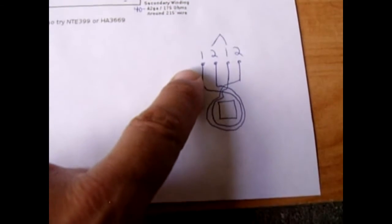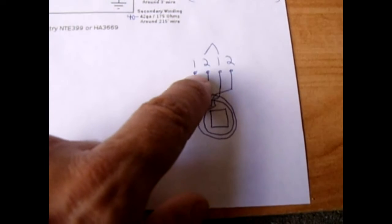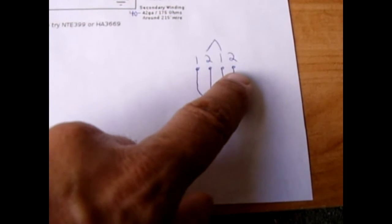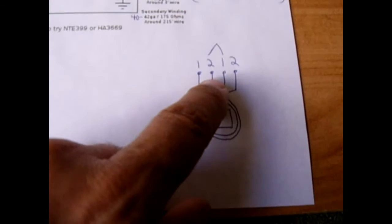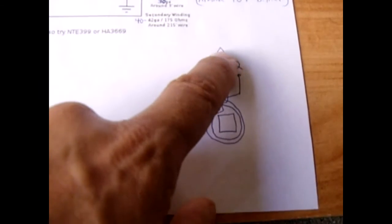And you want to make sure number two terminates in that position because you're going to tie number two and number one together and that is where the tap comes from, which is right here.